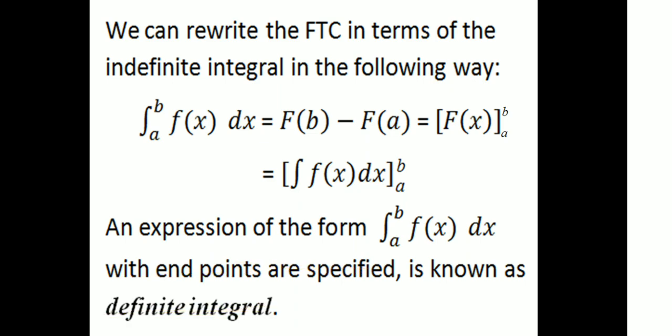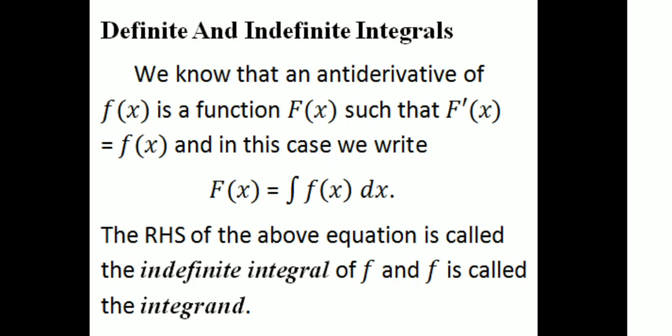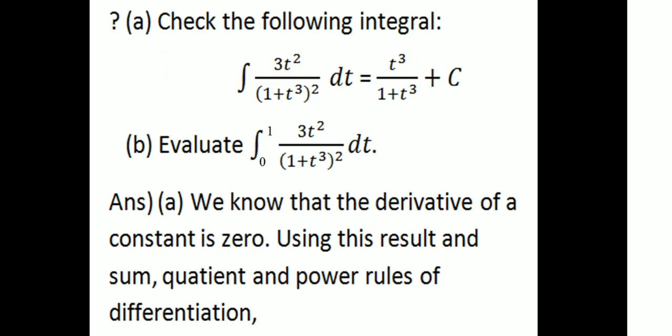An expression of the form integral a to b of f of x dx, with the endpoints specified, is known as a definite integral. Now, first example: check the following integral. That is, the integral of 3t squared divided by (1 plus t cubed) squared dt equals t cubed divided by (1 plus t cubed) plus c.